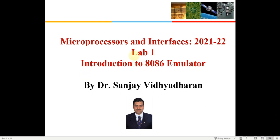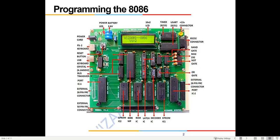Let's start today's lab. It is just an introduction to the 8086 emulator. This is the kind of 8086 processor motherboard which is available in our lab. It has got an 8086 processor here. If you see, there are some RAMs available wherein you load the program. There are also some EPROMs available wherein some permanent programs can also be programmed.